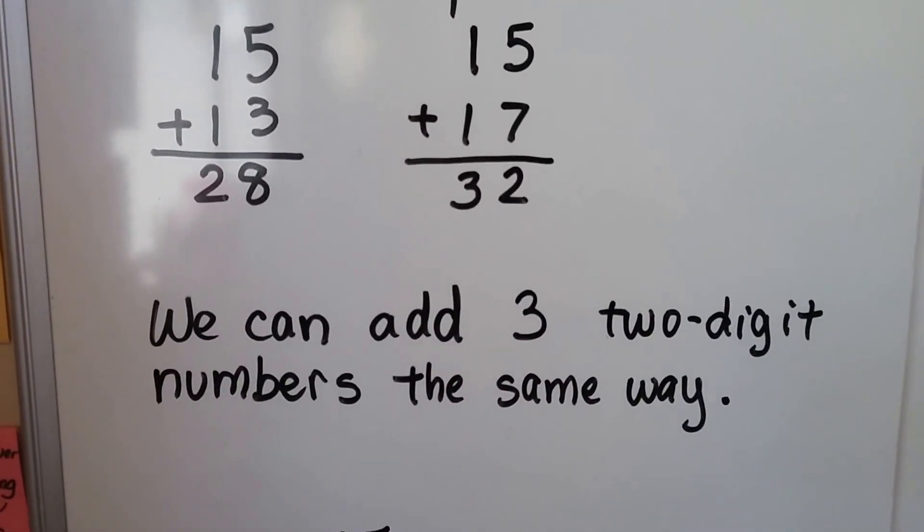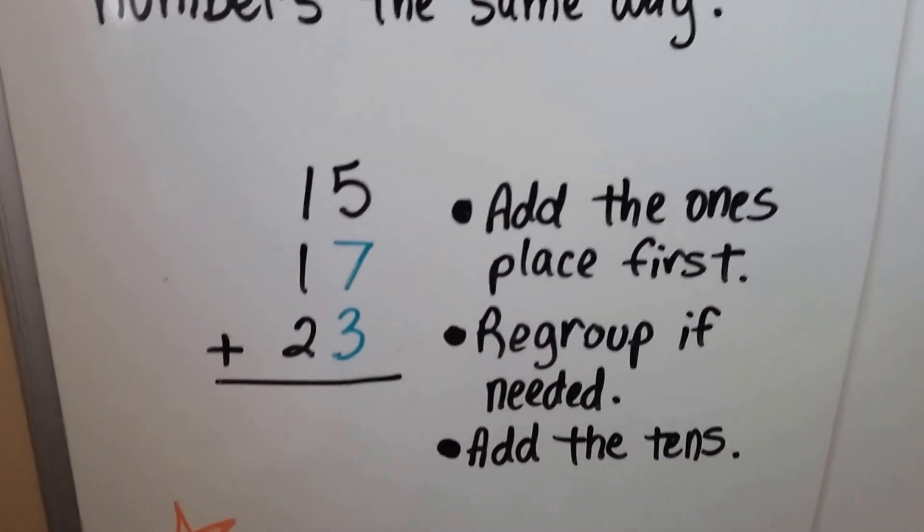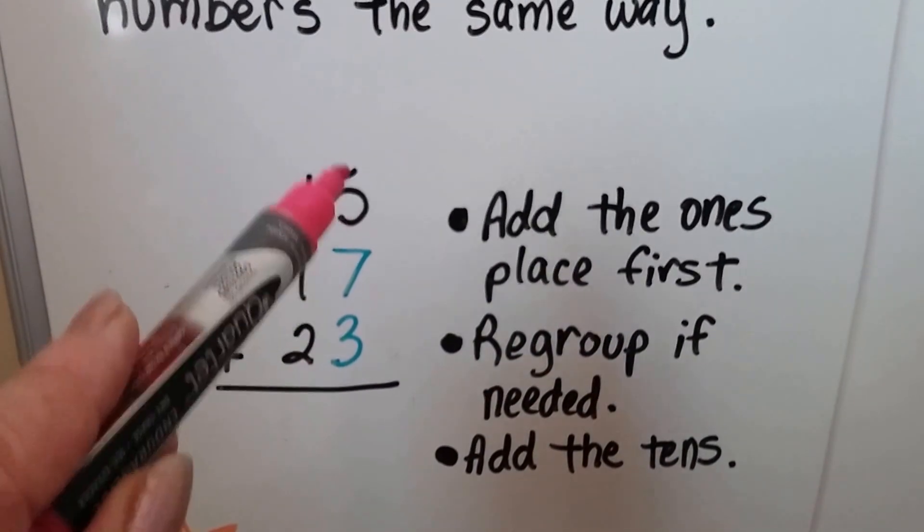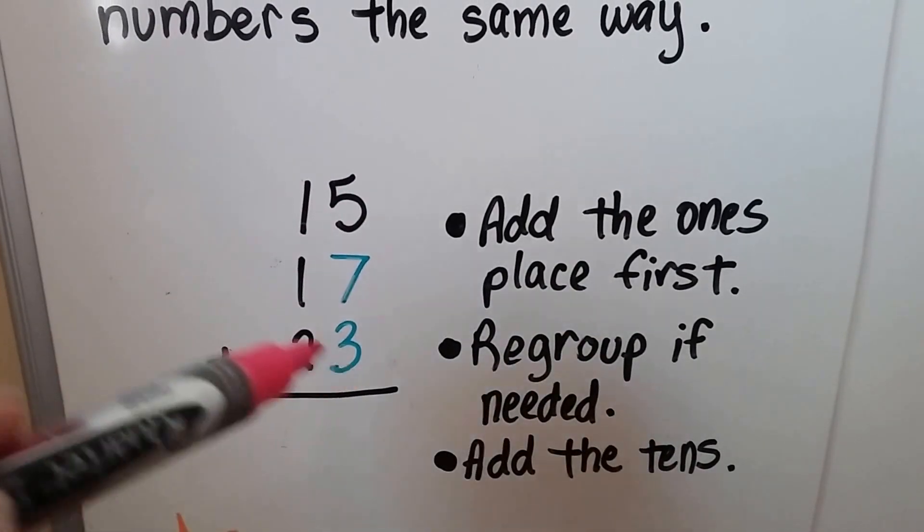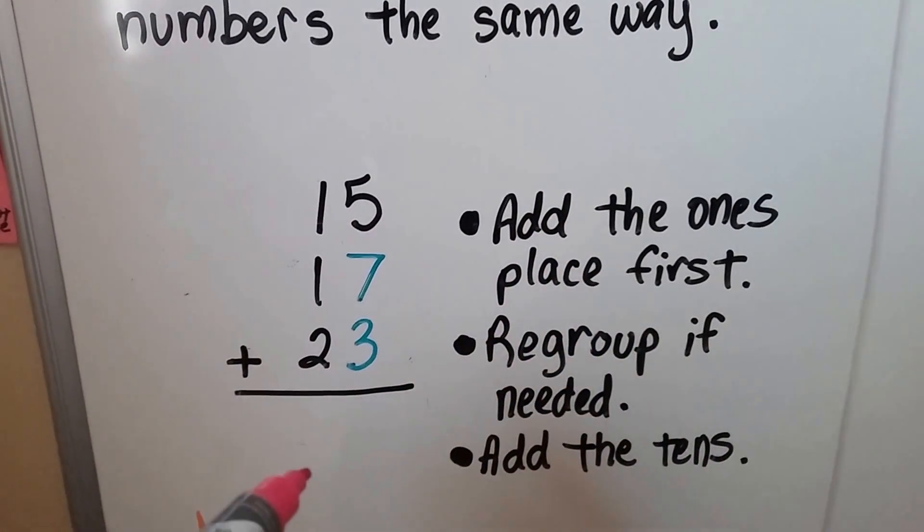Well, we can add three two-digit numbers the same way. We add the ones place first, we regroup to the tens place if needed, and then we add the tens.